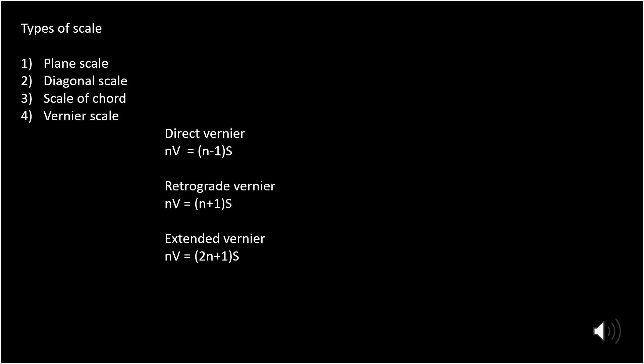The second is retrograde. In retrograde, vernier scale readings are more than the main scale readings. The formula is: n times of vernier is equal to (n plus 1) times of main scale. The reading on the vernier scale increases in the opposite direction to the main scale. In direct vernier both scales move in the same direction, but in retrograde they move in opposite directions.